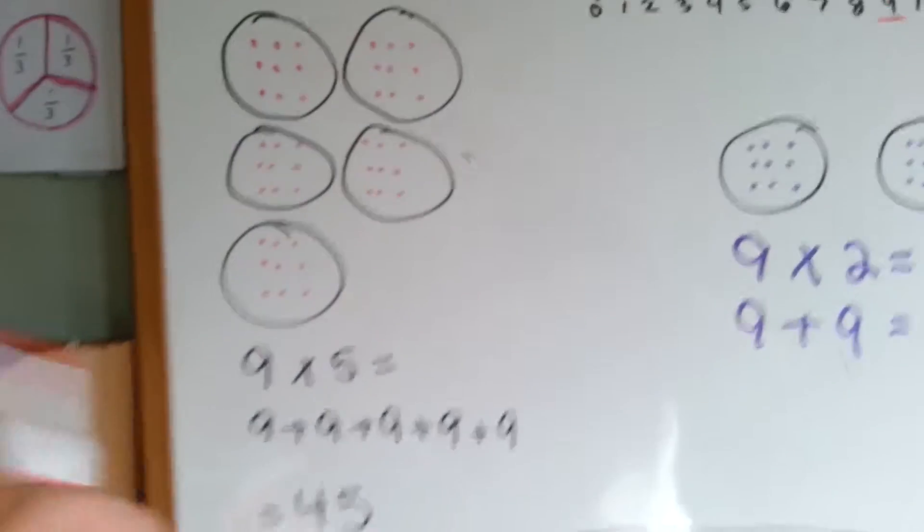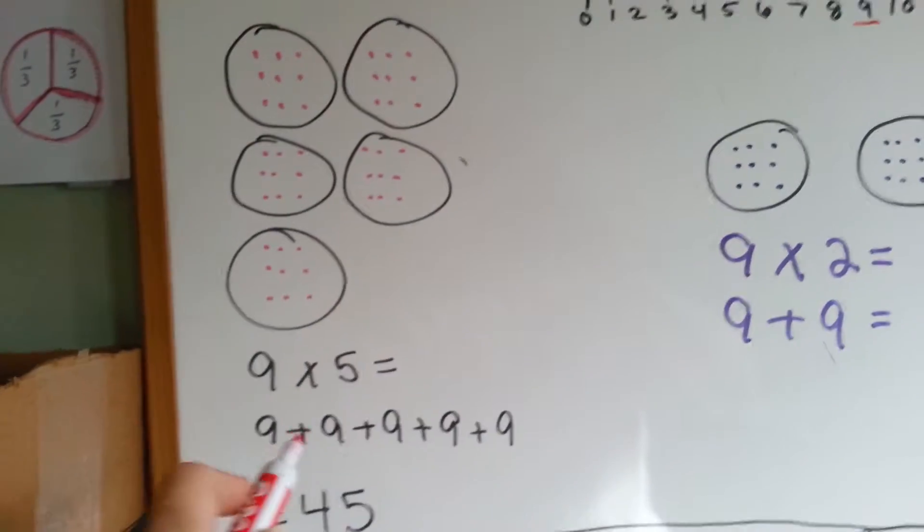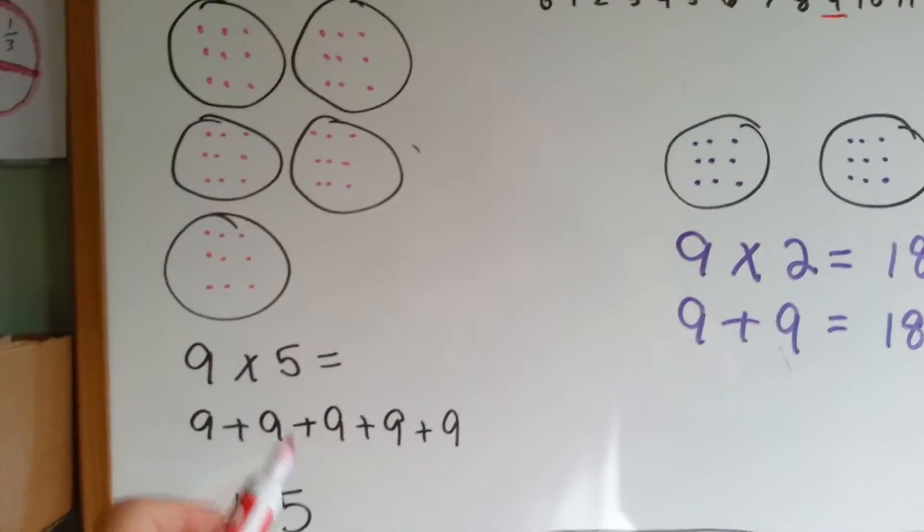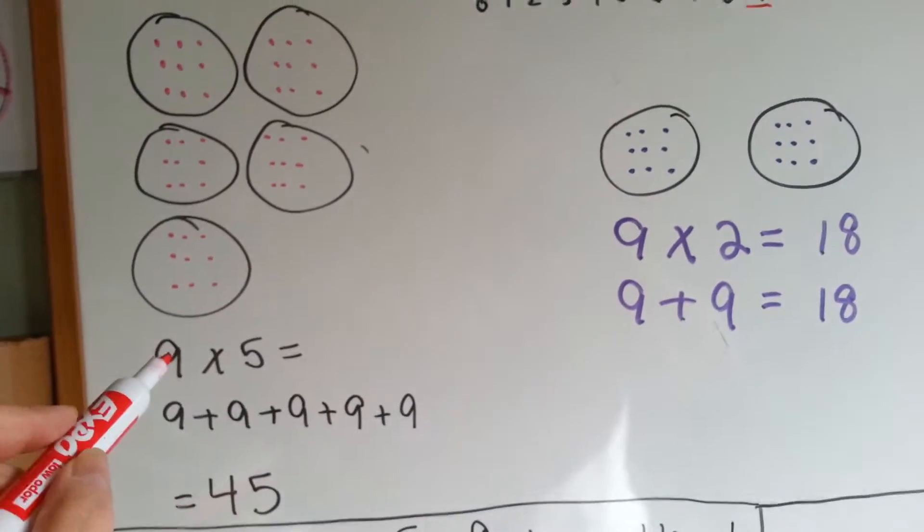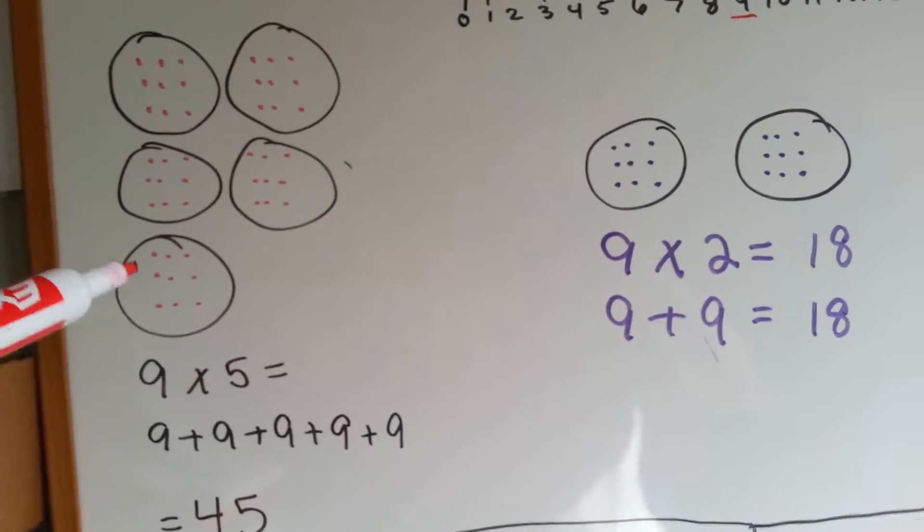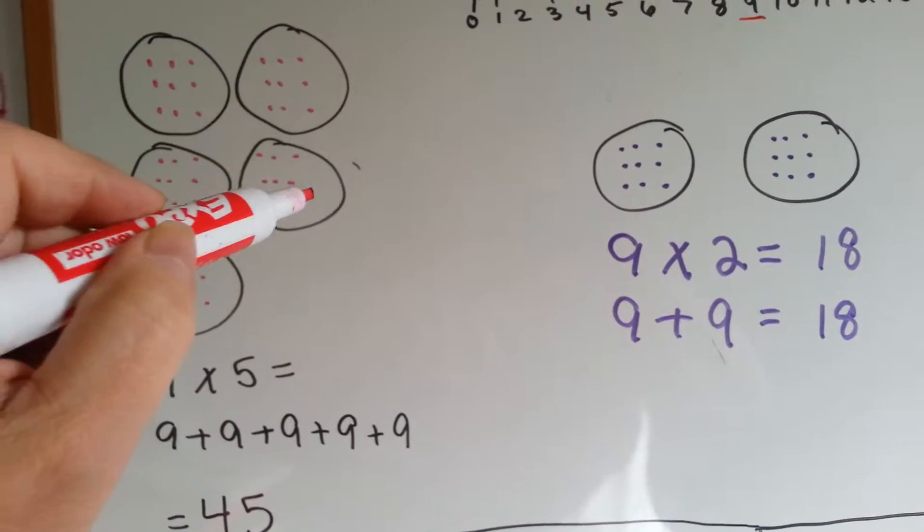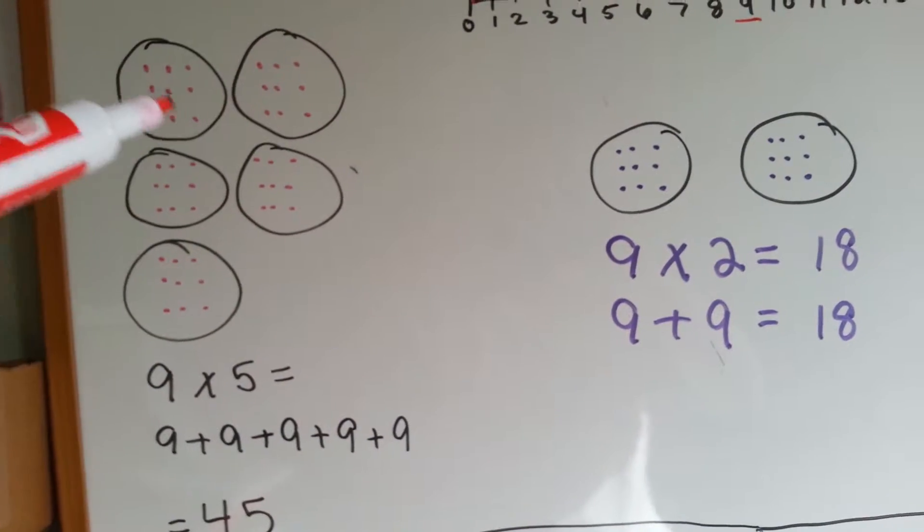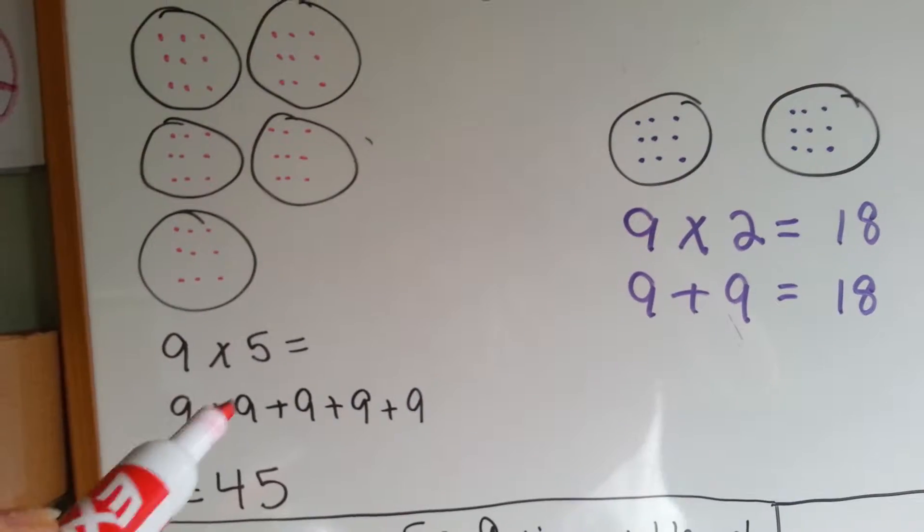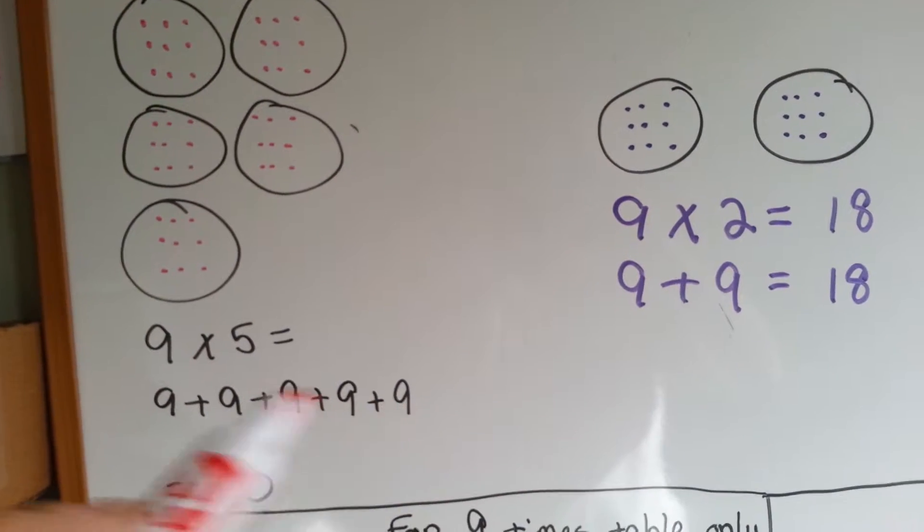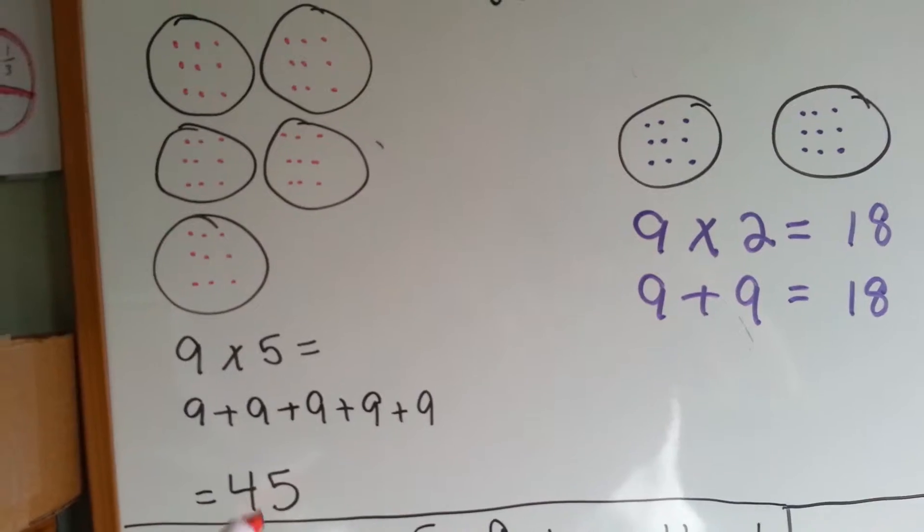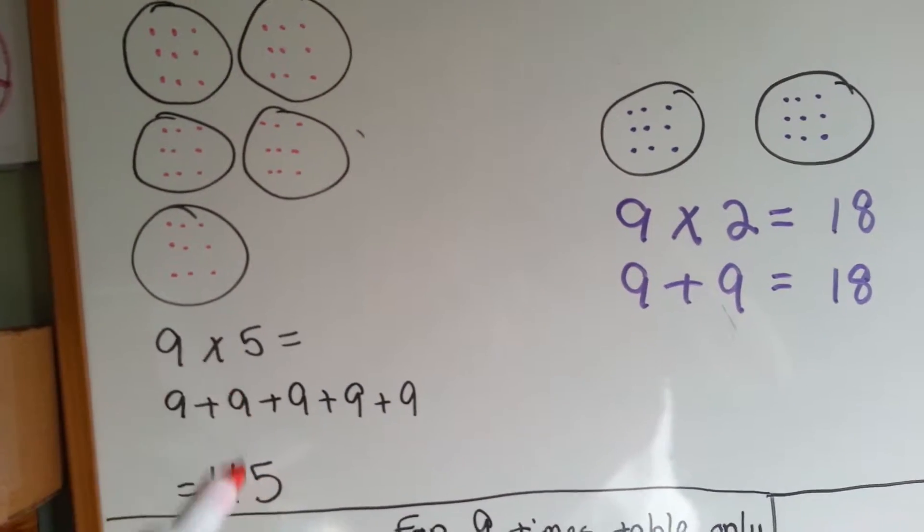When you multiply by 9, it's the same thing as adding a bunch of 9s together, just like the other times table. 9 times 5 means you got a 9 five times. 1, 2, 3, 4, 5 times, there are little dots of 9. If you added these 5 nines together, or did 9 times 5, you would get 45. It's the same thing.